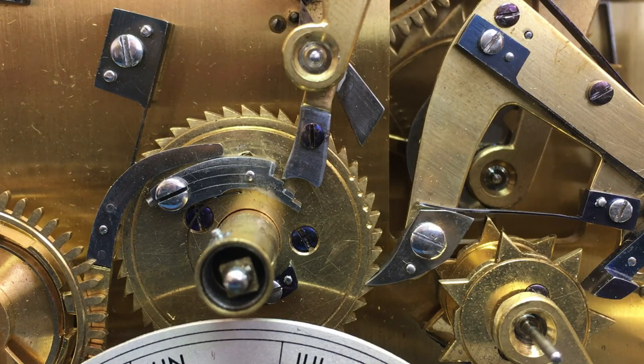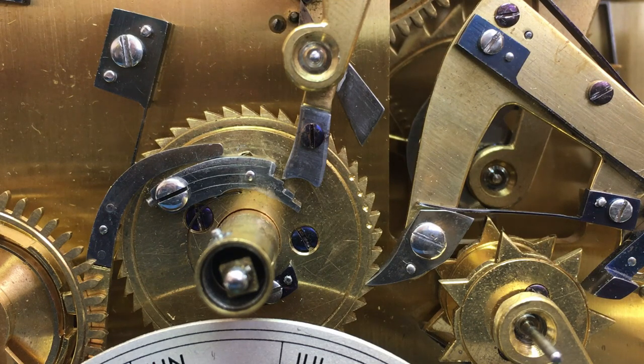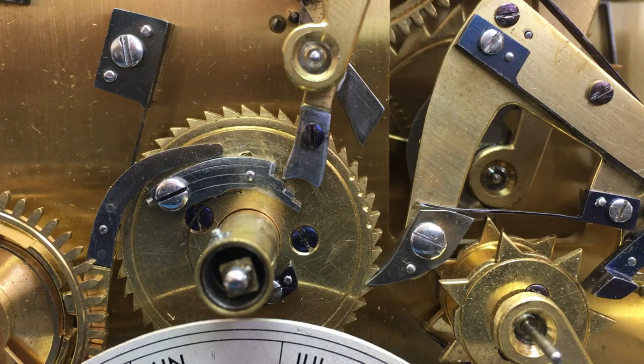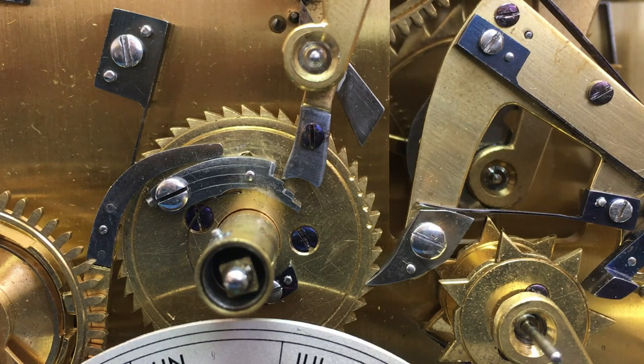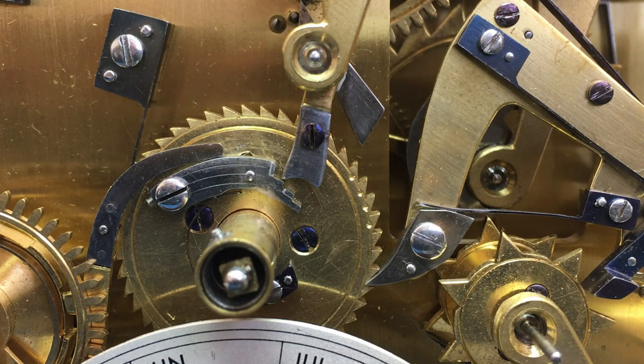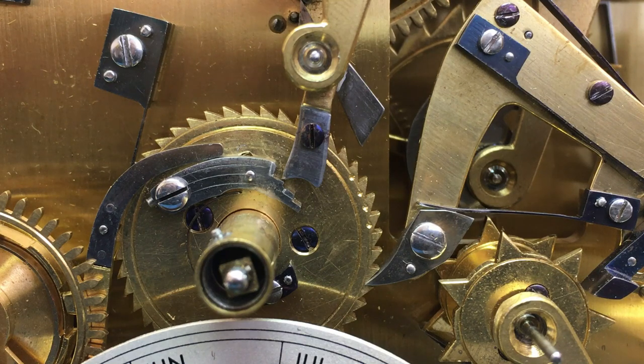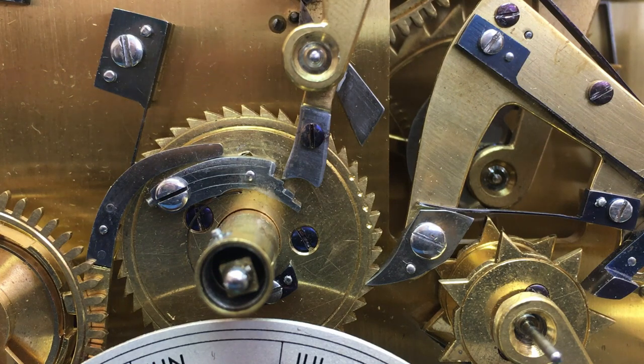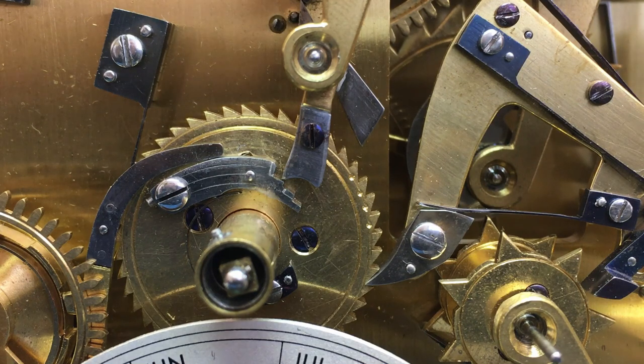In a watch, it wouldn't be a problem because under a glass, you're not going to be interacting with the hands directly. You're going to be setting the calendar by using a quick set function of some description, a pusher to pump it on or whatever. So the mechanism is always going to be doing what it wants to do. But on a clock, it's kind of part of the design of a clock. Part of the brief is that the hands are going to be interacted with, whether it's by accident or whether it's that the clock is set by just moving the hand on.